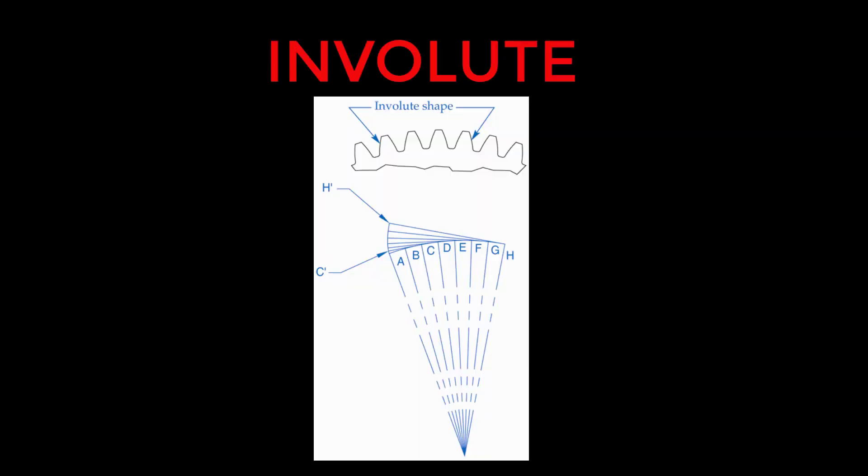An involute is used almost exclusively in gear teeth. It is the path a point follows if it is attached to the end of a string and the string is unwound from a cylinder. What ends up happening is as gear teeth are spinning, it's maintaining a point of tangency instead of sliding. So it's the most efficient way the teeth can touch each other and transmit power.